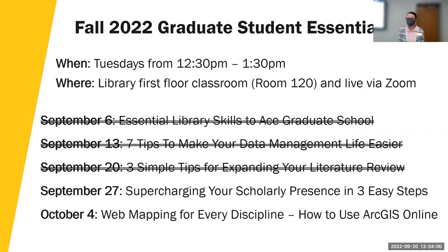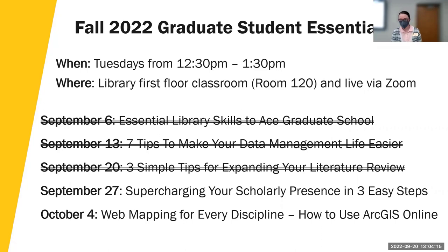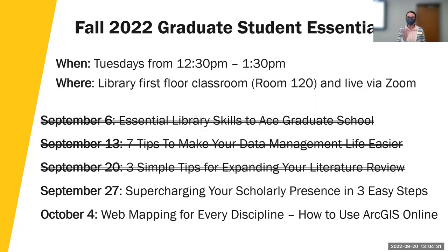That is all for today. We have two more graduate student essential workshops this semester: September 27th, 'Supercharging Your Scholarly Presence in Three Easy Steps,' and October 4th, 'Web Mapping for Every Discipline: How to Use ArcGIS Online.' Please consider signing up to attend live or to receive the recording. If you're in person, there's a short assessment form, and on Zoom, a link to a follow-up survey has been shared in the chat. Thank you very much.